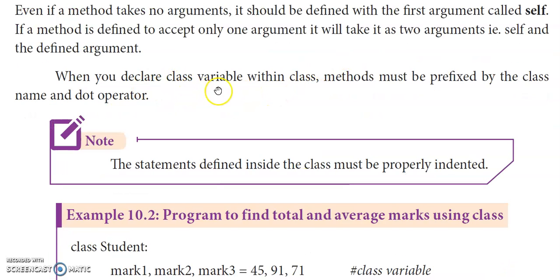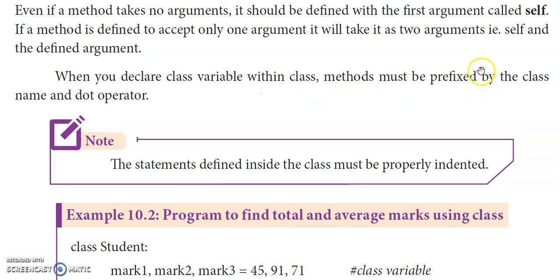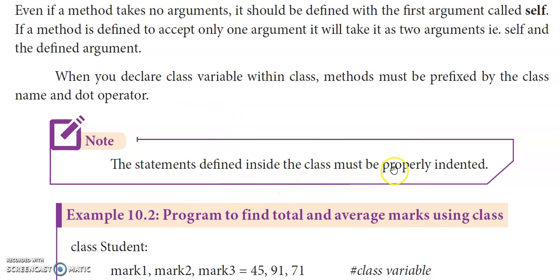When you declare class variables within a class method, they must be prefixed by the class name and the dot operator. So to use class variables inside class methods, you use class name dot variable name. Also, all statements defined inside the class must be properly indented.